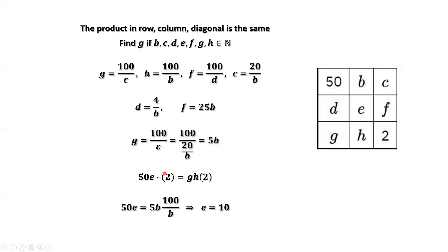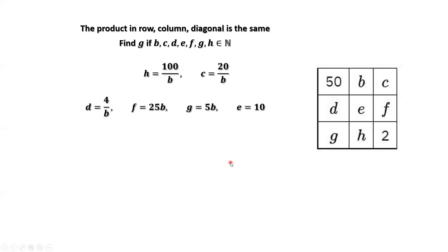We cancel 2 on both sides and replace G by 5B and H by 100 over B. B and B cancel. Solving this equation, we find E equals 10. We have all results here — all variables can be written in terms of B, except this constant.